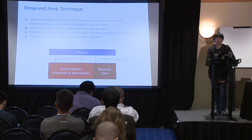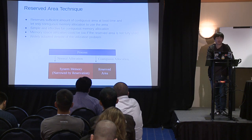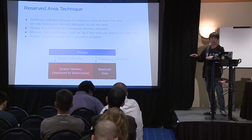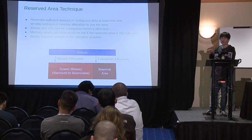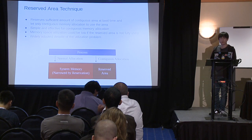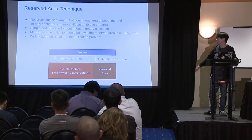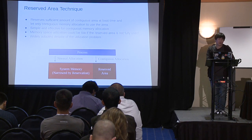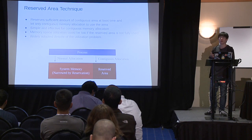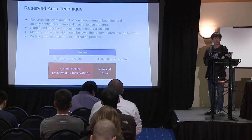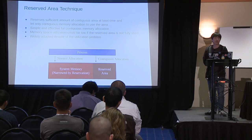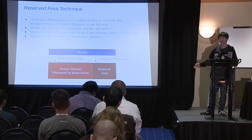Second, there is the reserved area technique. The idea is very simple: it just reserves a sufficient amount of contiguous memory at boot time — since there is no fragmentation at early boot time — and then lets only contiguous memory allocations use that reserved area. It is very simple and effective, really powerful. But if the reserved area is not fully used by contiguous allocation requests around the clock, memory utilization could be very low. However, this is one approach that is widely adopted in today's systems despite the utilization problem.